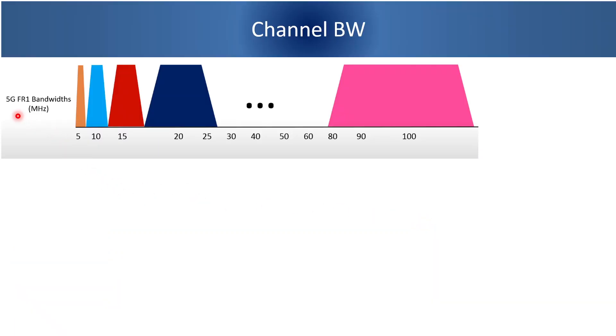In frequency range 1, that is from 410 MHz to 7.125 GHz, the channel bandwidth supported in 5G are 5 MHz, 10 MHz, 15 MHz, 20 MHz and up to 100 MHz.